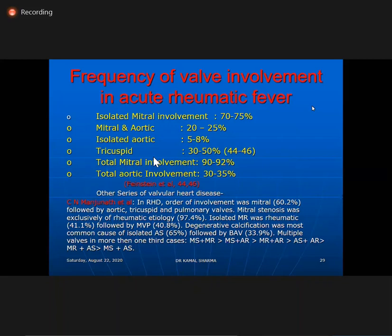Mitral and aortic both are involved in 25%; isolated aortic occurs in 5 to 8%; and tricuspid is involved in 30 to 50% in Indian autopsy series. In Manjunat's series, the mitral valve was involved in 60% and was the exclusive etiology in almost 97%. Degenerative calcification was the most common cause of isolated AS, followed by bicuspid valve. For multiple valves: MS+MR is the commonest combination; MS+AS is the rarest.